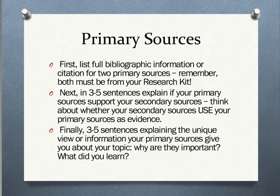So those are our secondary sources. We're using our secondary sources for historical context — to tell us the story of who, what, when, where, and very importantly, why we dropped the atomic bomb on Hiroshima. Now we turn to our primary sources. Again, you're going to choose two and give us the full bibliographic information or citation for these sources, and remember that these must be from your research kit.